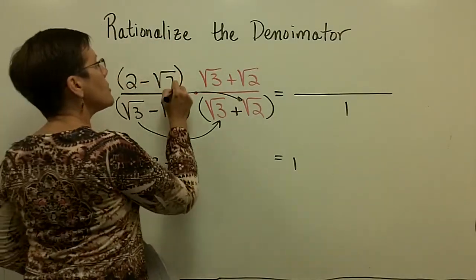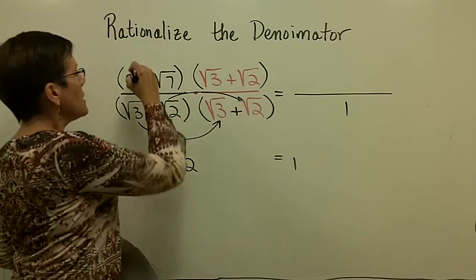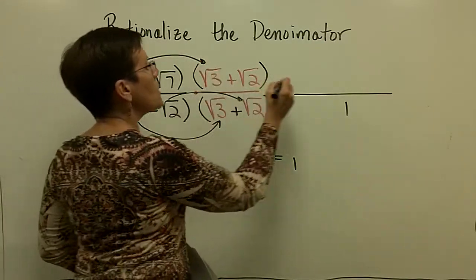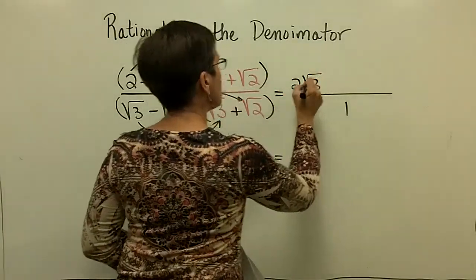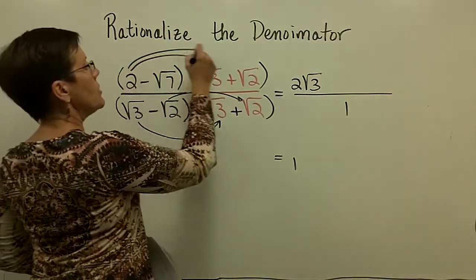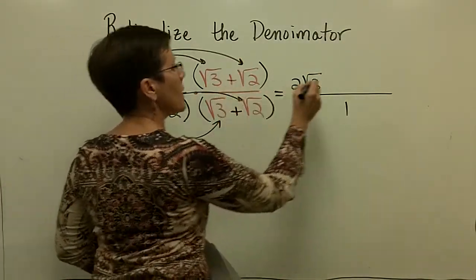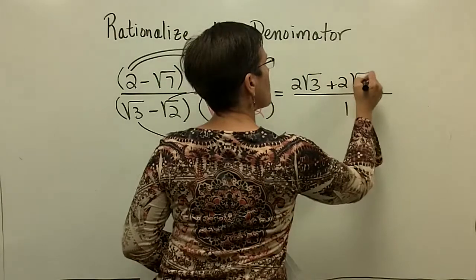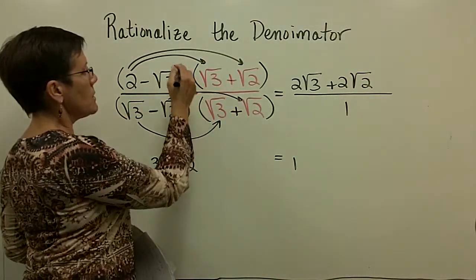Upstairs, I have to FOIL these expressions. I have to take 2 times the square root of 3, and then I have to take 2 times the square root of 2 with a plus sign - 2 times the square root of 2. Then I have a minus sign here times a positive.